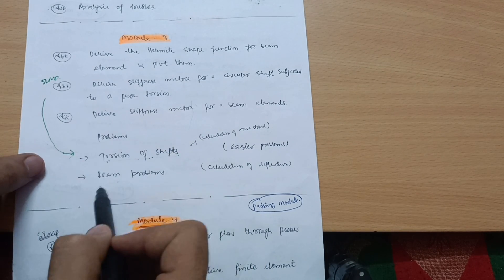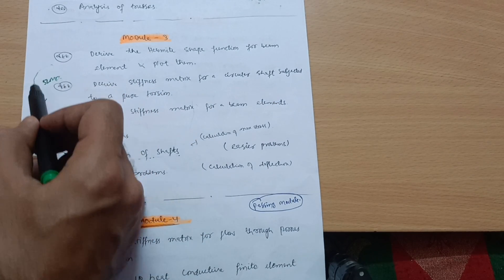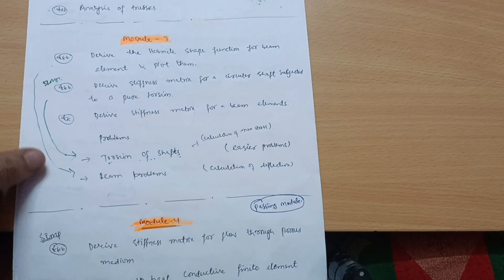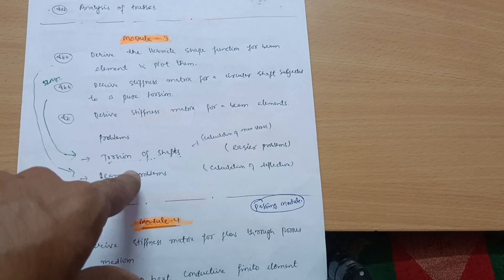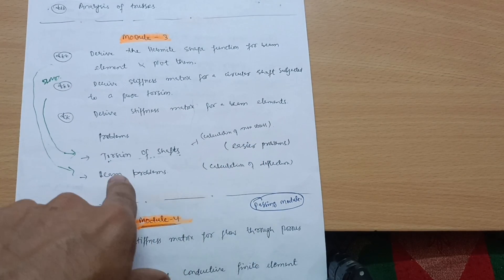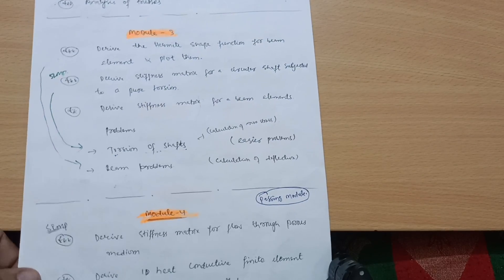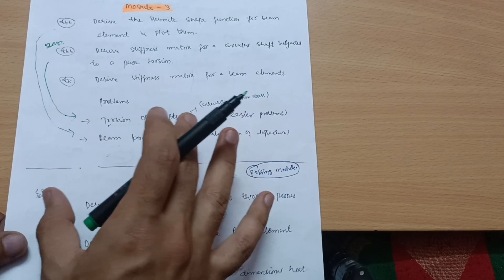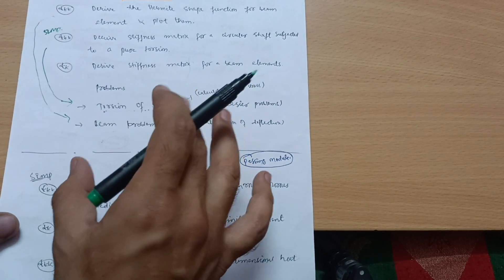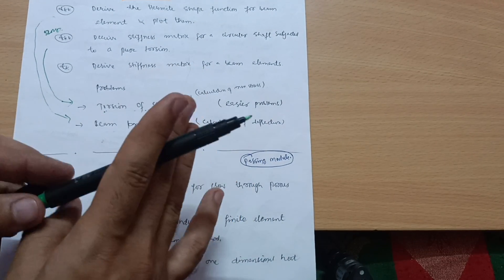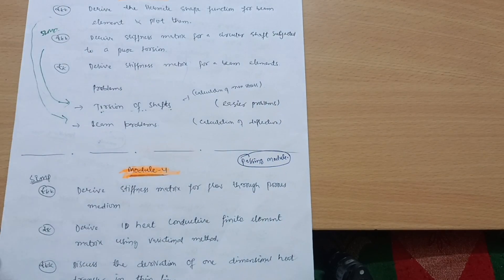Go through torsion of shaft problems. Next are beam problems — if you are going through the Hermite shape function derivation, then definitely go through the beam problems as well. Practice more on torsion of shafts, which are easier compared to beam problems where you calculate deflection. This is not a passing module — if you are not covering the problematic part, you can get only 10 marks from the derivation.